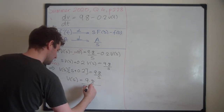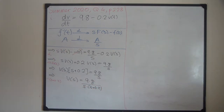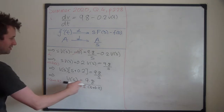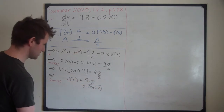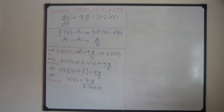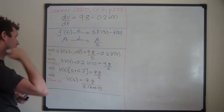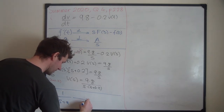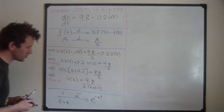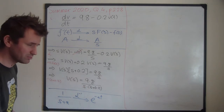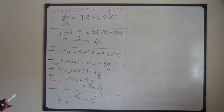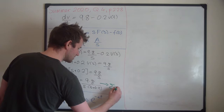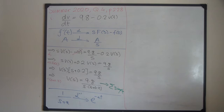We now have 9.8 divided by s(s + 0.2). We want to send this back using the tables. We know 9.8/s goes back to 9.8, and 1/(s+a) goes back to e^(−at). But the problem is these things are multiplied together — you can't invert them separately. It's only sums that you can apply the inverse Laplace transform to separately, so we need to write this as a sum of simple terms using partial fractions.